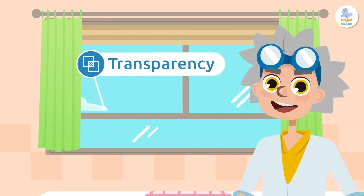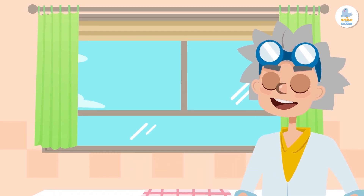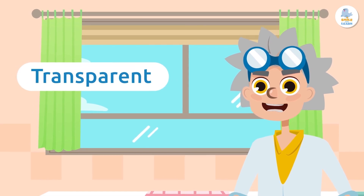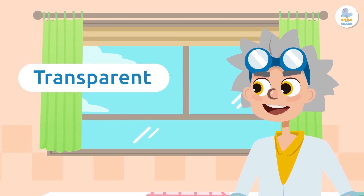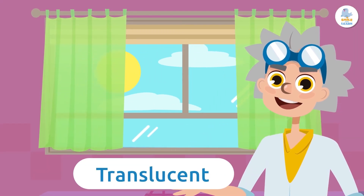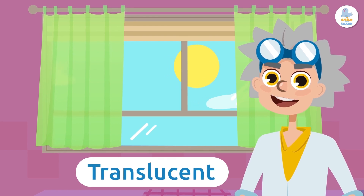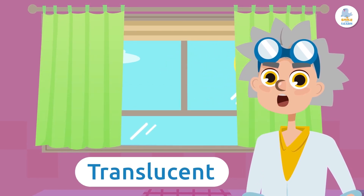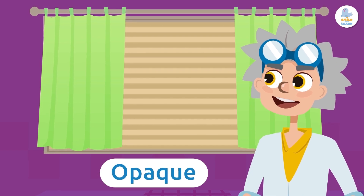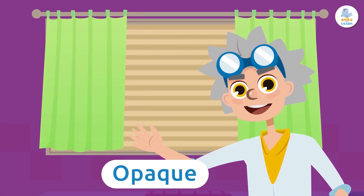Transparency. Transparency is a property of materials that refers to how easily light can pass through them. Materials can be transparent, like window glass — we can see through it. They can also be translucent, like curtains, because although we cannot see through the fabric, it does allow light to pass through. And finally, they can be opaque, like blinds, since they do not allow light to pass through.